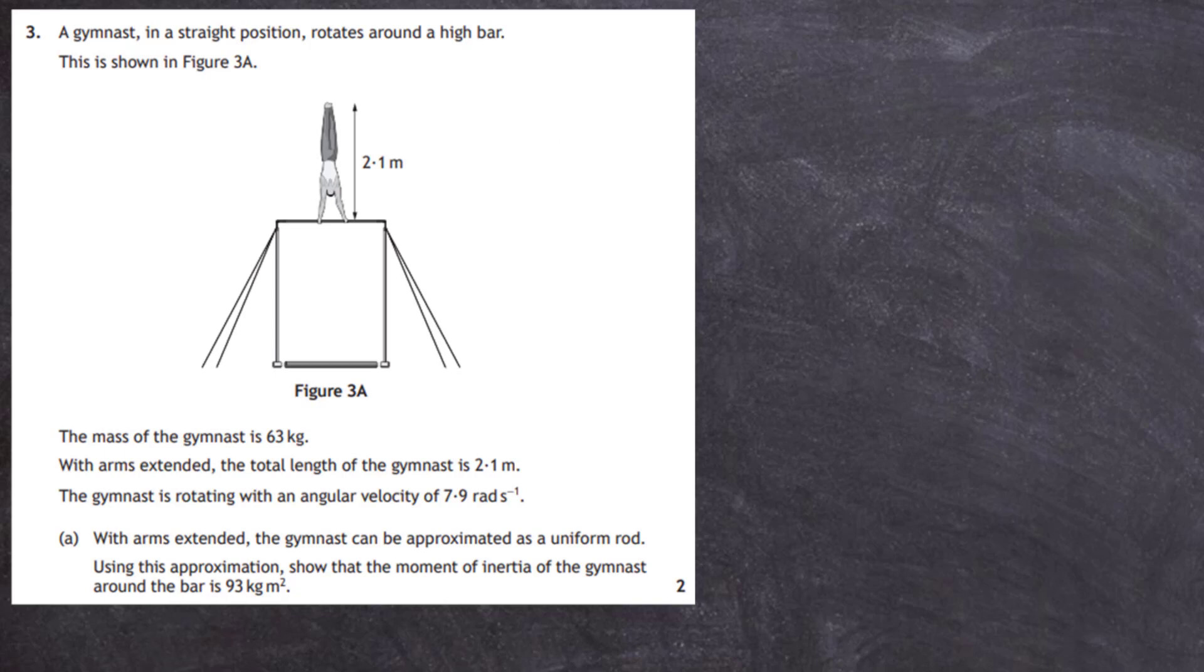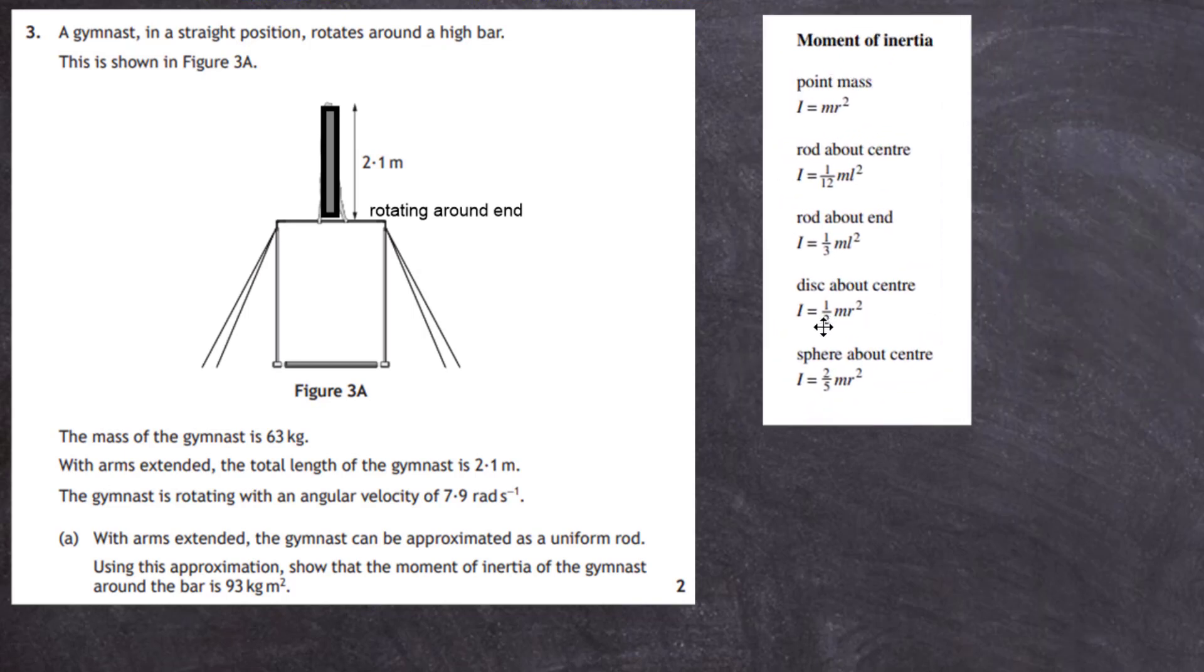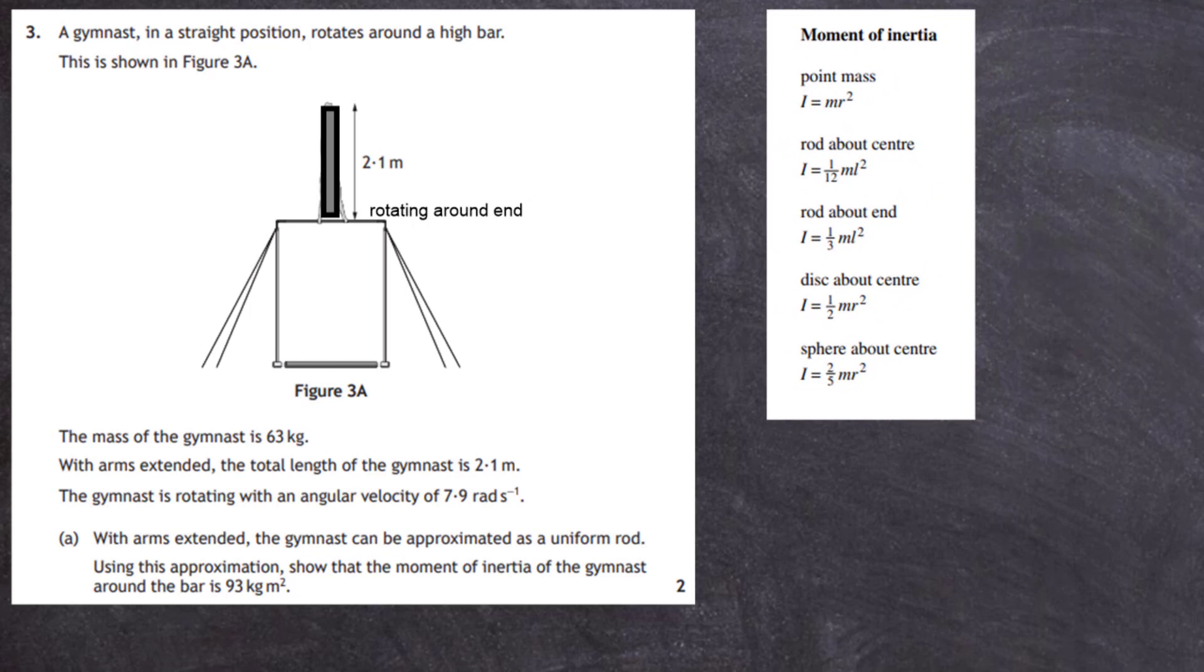So we've got to assume that the gymnast is a straight rod, a uniform rod rotating around the bar as shown. So where do we get our information from for this? We go to our data book which has got all the moments of inertia inside, and the one we're looking for is rod about the end.